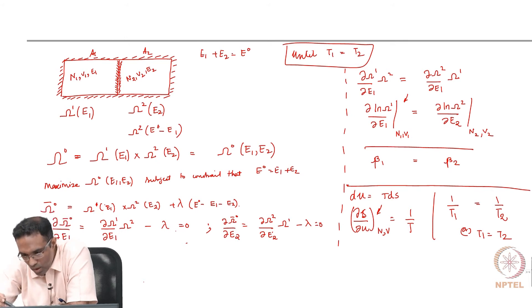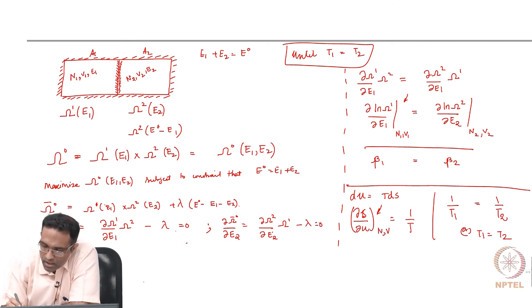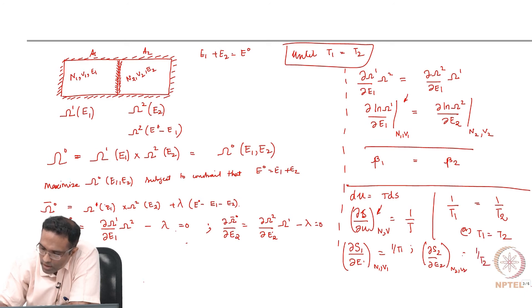This is dou ln omega 1 by dou e1, this is dou s by dou u, and in this case u is nothing but e, that is the internal energy of the system. So dou s 1 by dou e 1 at constant n 1 comma v 1 will be equal to 1 by t 1, and dou s 2 by dou e 2 will be equal to 1 over t 2 from thermodynamics.